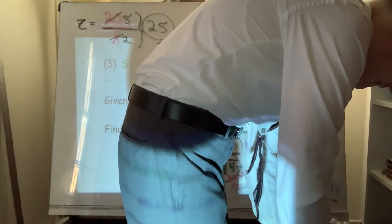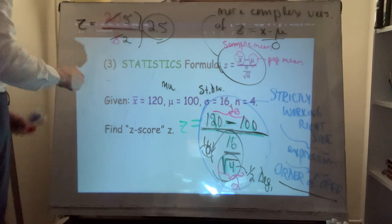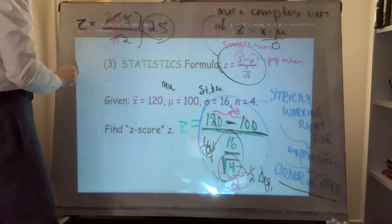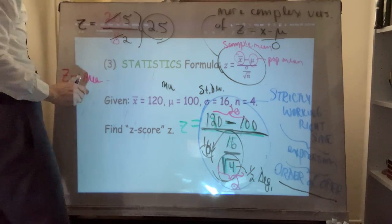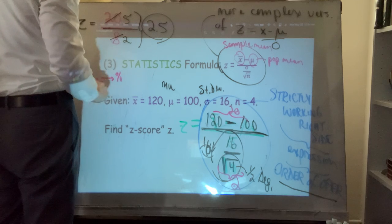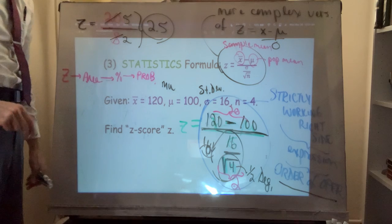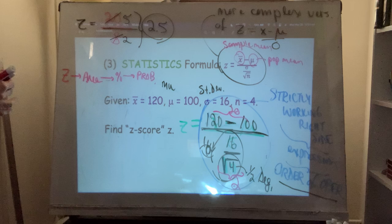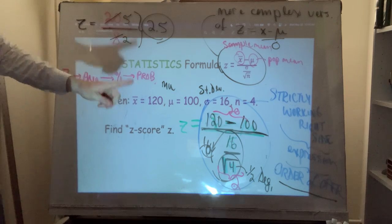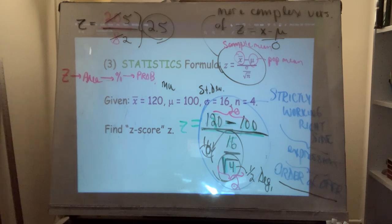From a z-score you can basically determine an area, from the area determine a percentage, and from that percentage determine a probability. This is for statistics — you will revisit this in Chapter 12. If you don't feel super comfortable about it right now, that's okay; it takes a lot of examples to really get comfortable with it.